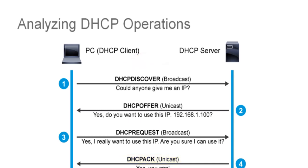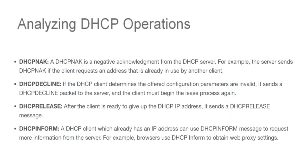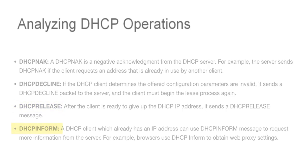This is a simplification of a successful DHCP negotiation. Keep in mind that there are other messages that you might see, including the DHCP NAK, which is a negative acknowledgment from the server, the DHCP decline, which is sent from the client due to invalid parameters, the DHCP release, sent by a client that's ready to relinquish its IP address, and the DHCP inform when a client is requesting more information.